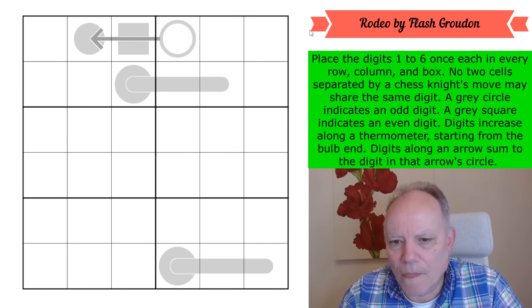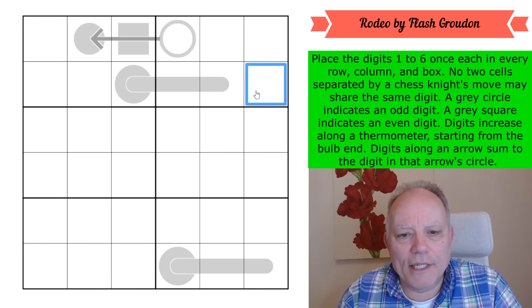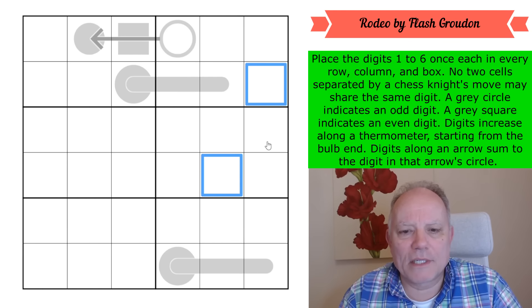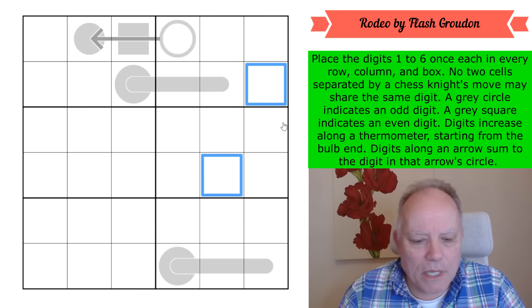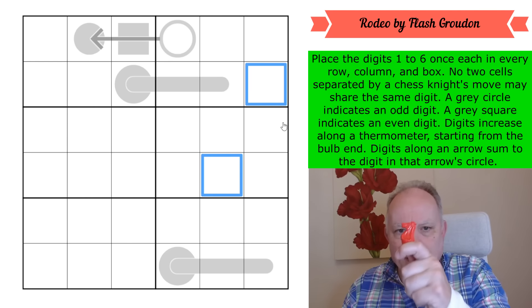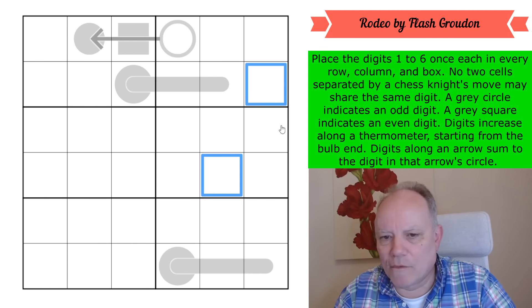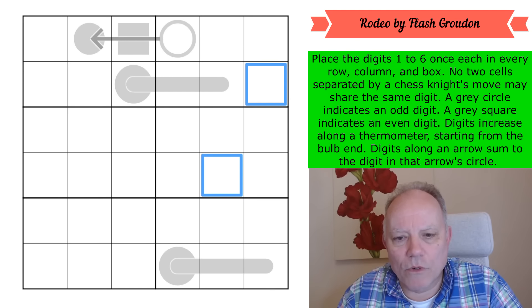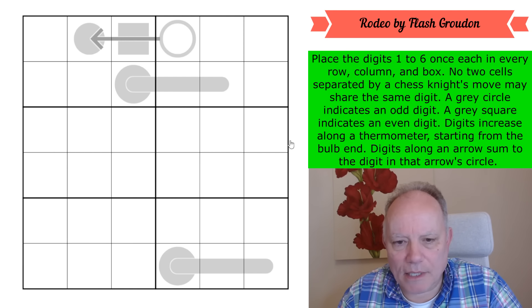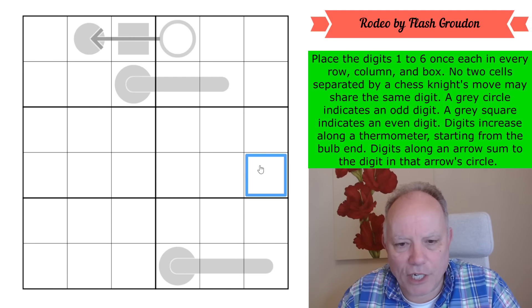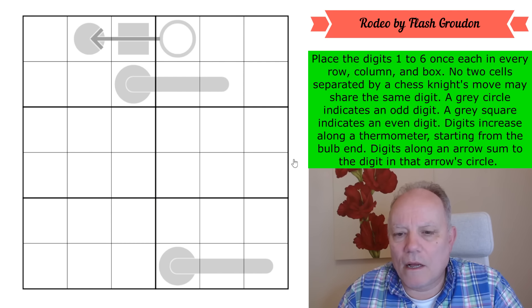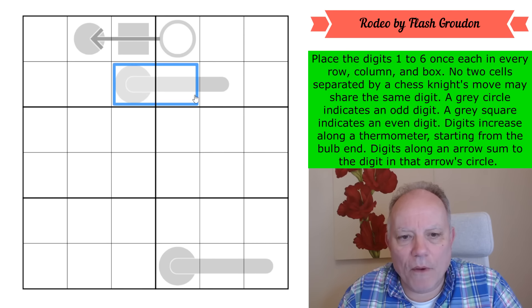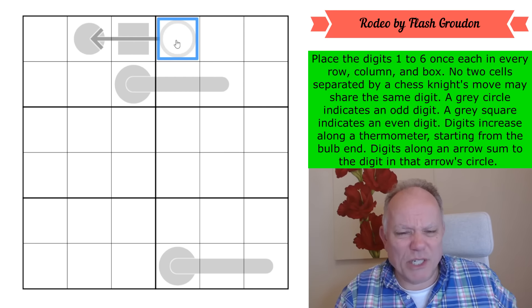Digits a knight's move apart cannot contain the same digit, so I've got my friend Nighty McKnight Face in case I need reminding of that rule. Thermo digits must increase along a thermometer starting from the bulb end. The two digits on an arrow sum to the digit in the circle.